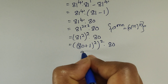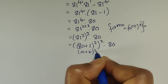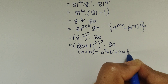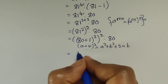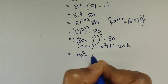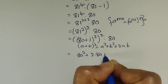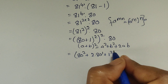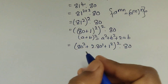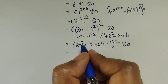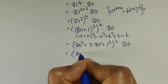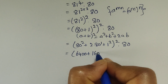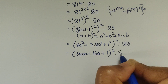This is in the form of (a plus b) whole square. We know the formula: a squared plus 2ab plus b squared equals (a plus b) whole square. Using this formula, here we can write 80 squared plus 2 times 80 plus 1 squared, whole squared times 80. So 80 squared equals 6400, plus 2 times 80 which equals 160, plus 1.